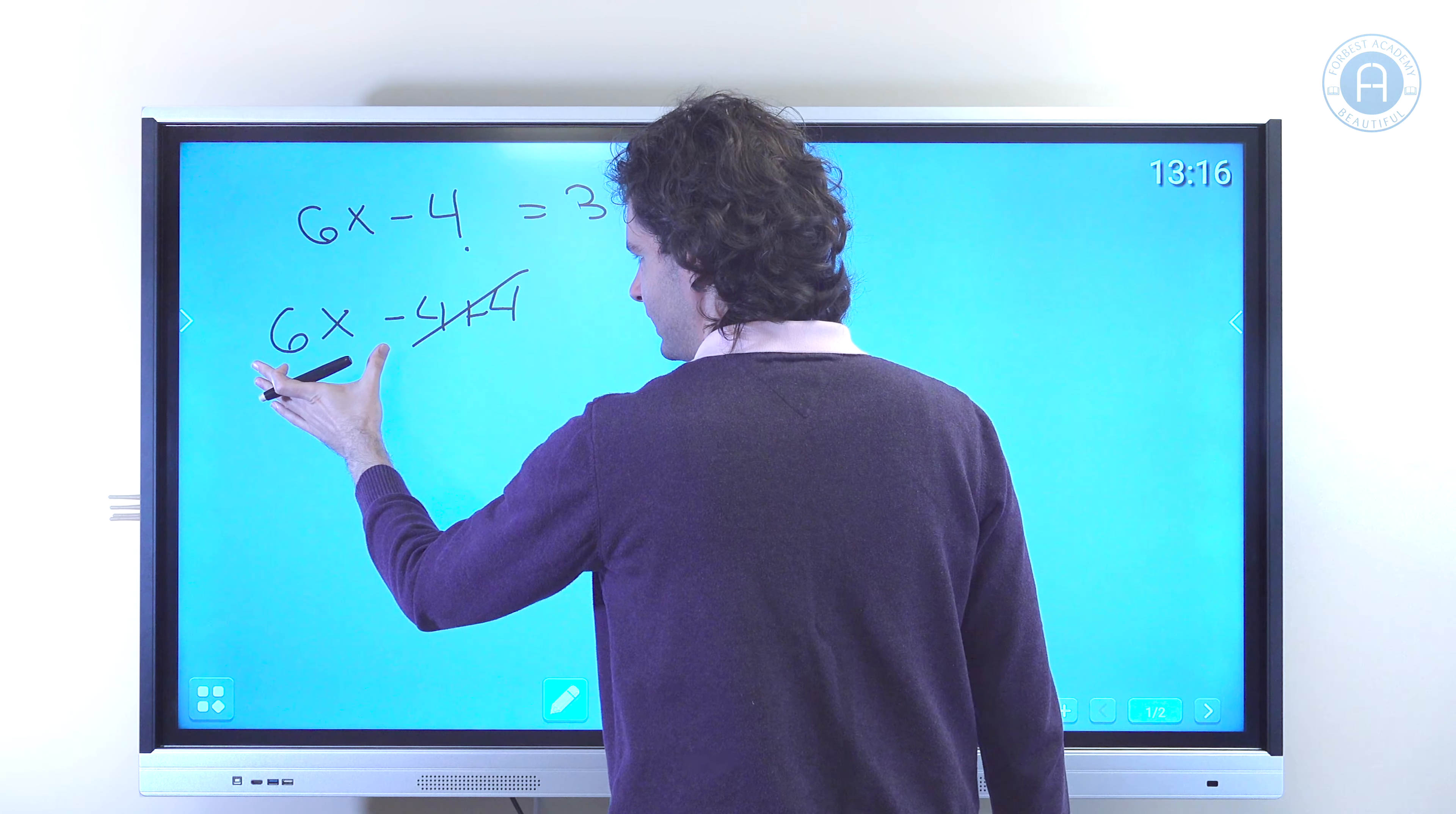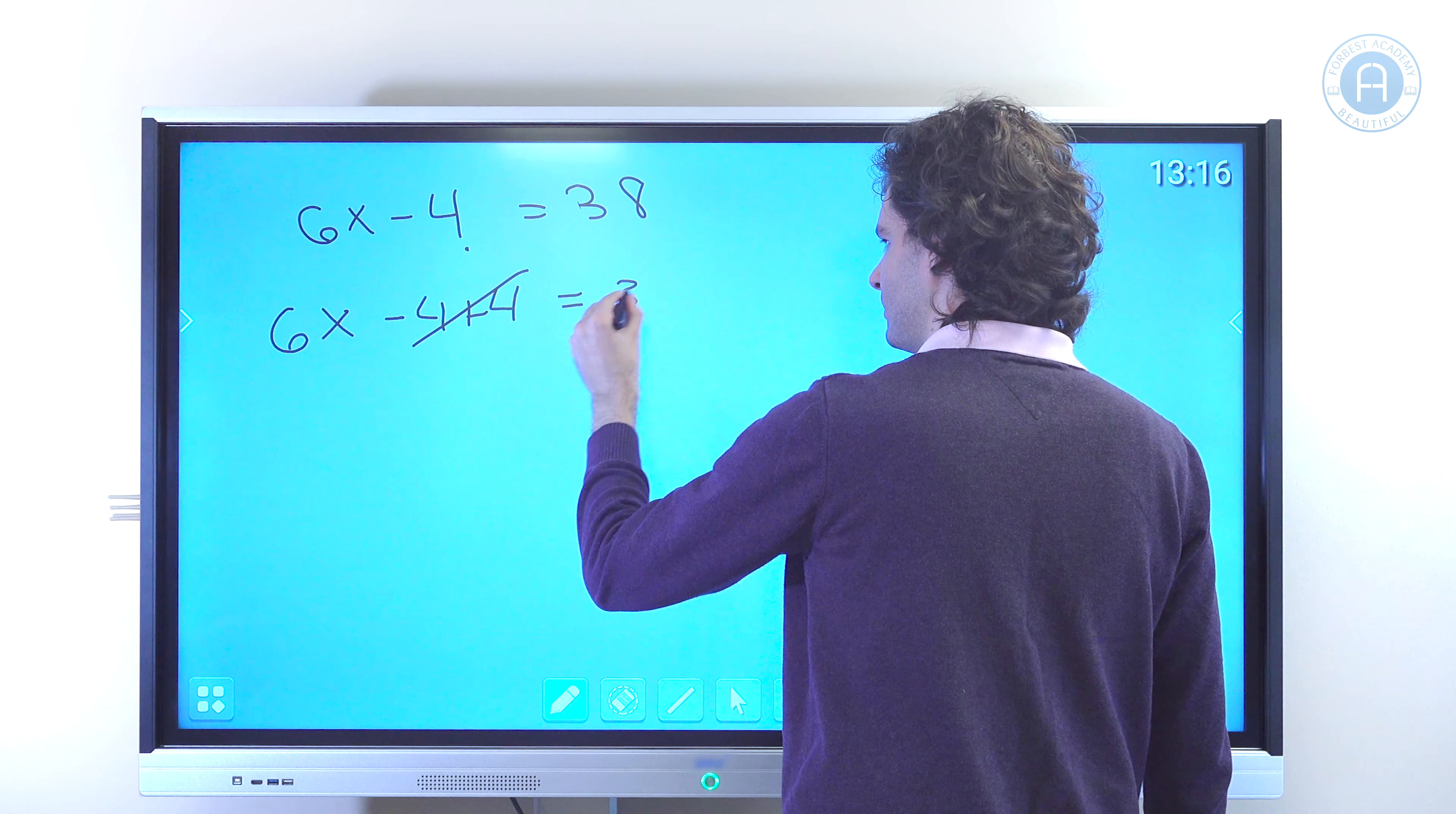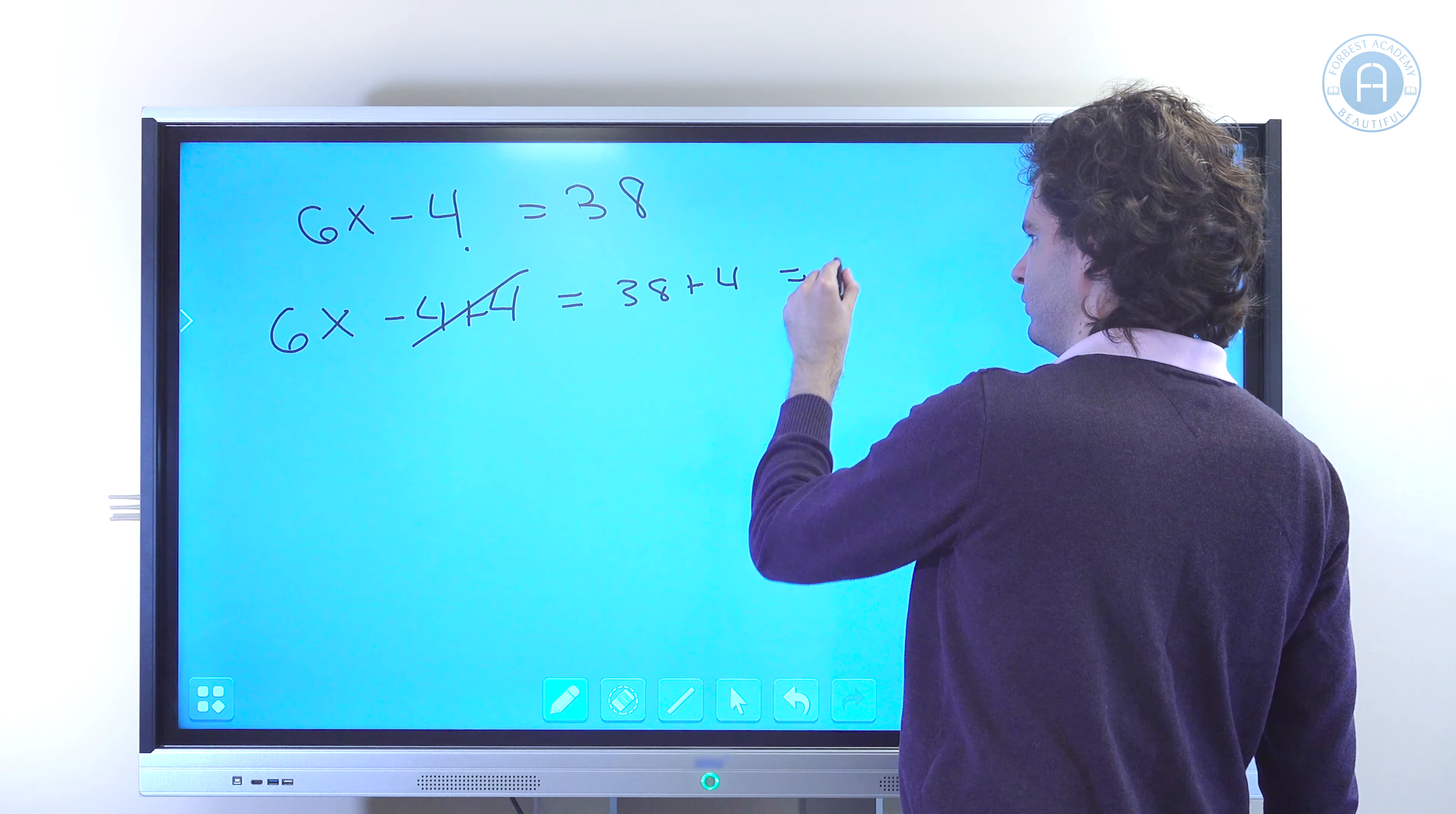And then whatever I do to the left hand side of the equation needs to be done to the right hand side of the equation. So here I'm going to have 38 plus 4, which is of course 42.